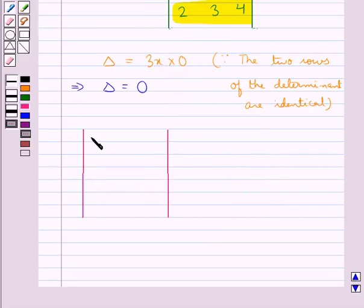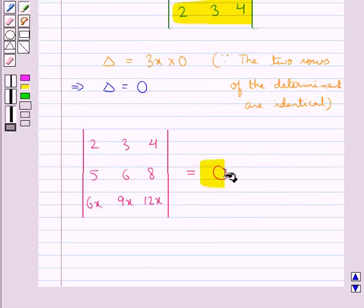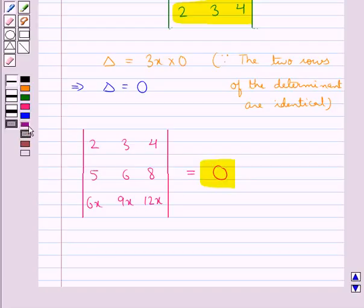So therefore the value for the given determinant is 0. Thus the determinant with elements 2, 3, 4 in the first row, 5, 6, 8 in the second row and 6x, 9x, 12x in the third row is equal to 0. So this is our final answer. This completes the session. Hope you have understood the solution of this question.